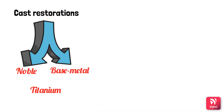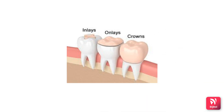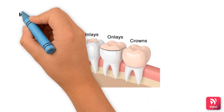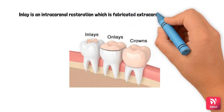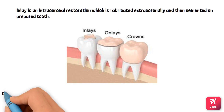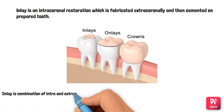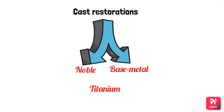Now we'll see what an inlay, onlay, and crown are. An inlay is an intracoronal restoration which is fabricated extracoronally and then cemented onto the prepared tooth. An onlay is a combination of intra and extracoronal restoration when one or more cusps are covered. A crown is an extracoronal cast restoration where all the cusps are covered.